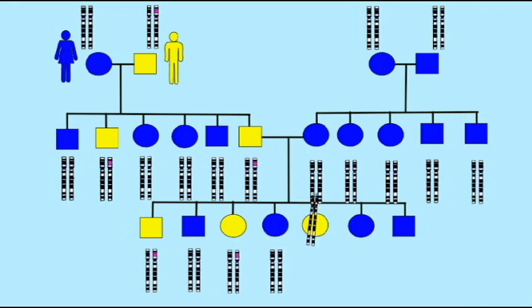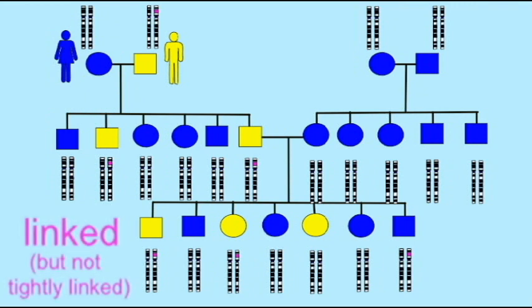While this section of DNA may be on the same chromosome as the gene that causes this trait, it may be somewhat distant on that chromosome. Therefore, crossing over can sometimes separate the DNA section and this phenotype.